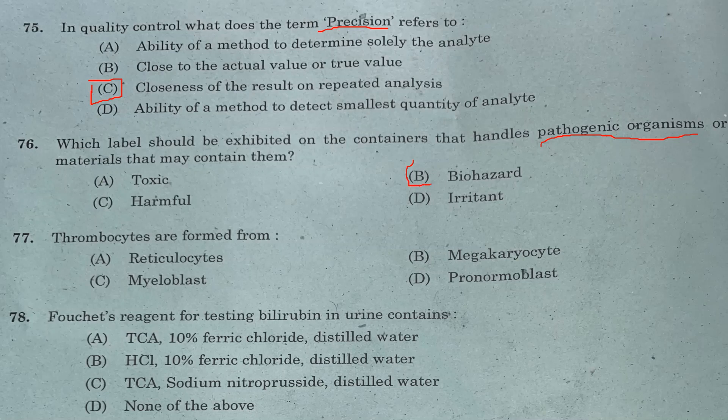Question 76: Which label should be exhibited on containers that handle pathogenic organisms or materials that may contain them? Option A: toxic. Option B: biohazard. Option C: harmful. Option D: irritant. Answer is Option B, biohazard.